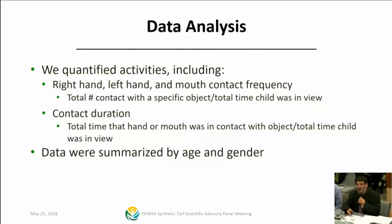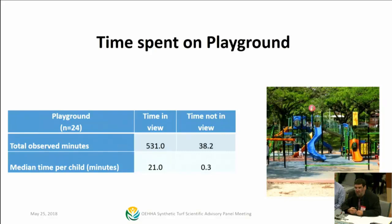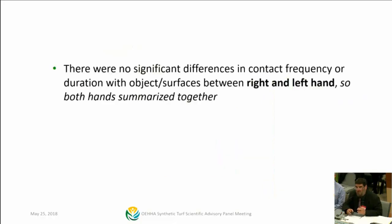They quantified activities including right hand, left hand, and mouth contact frequency, contact with specific objects, total time the child was in view, and duration of contact. The data were summarized by age and also looked at by gender. For each kid there was at least about 20 minutes of video time. There were no significant differences in contact frequency or duration between the right hand and the left hand, so for the data going forward we summarized them together.